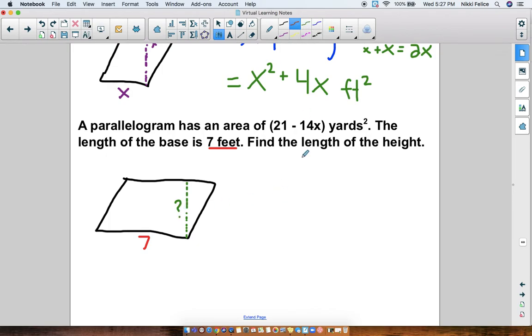But we do have our formula. Area equals base times height. So let's plug in what we know. Well, I know the area. It's 21 minus 14x. And that equals 7, because that's the base, times height, which I don't know yet. So now a lot of you are probably like, oh my god, what do we do now?